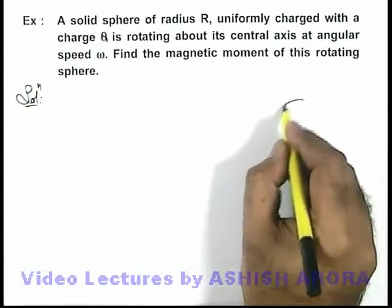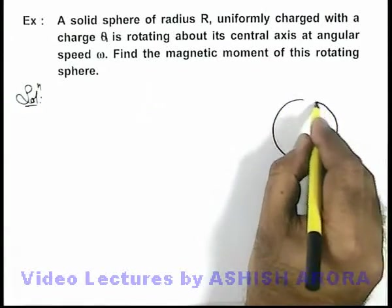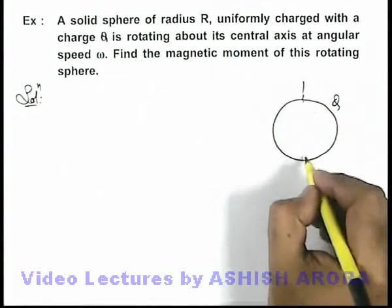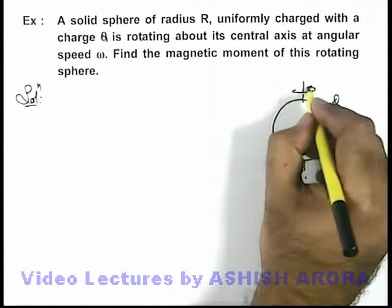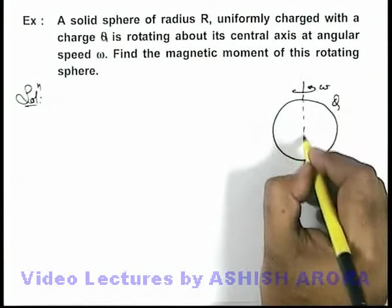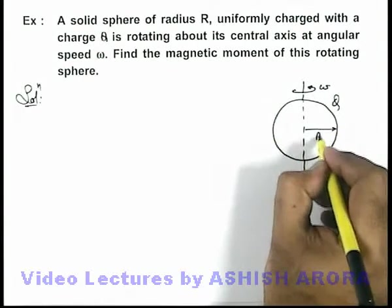In this solution here we can see if this is a solid sphere which is uniformly charged with a charge Q, and is rotating at angular speed omega with respect to the central axis. It is of radius R.